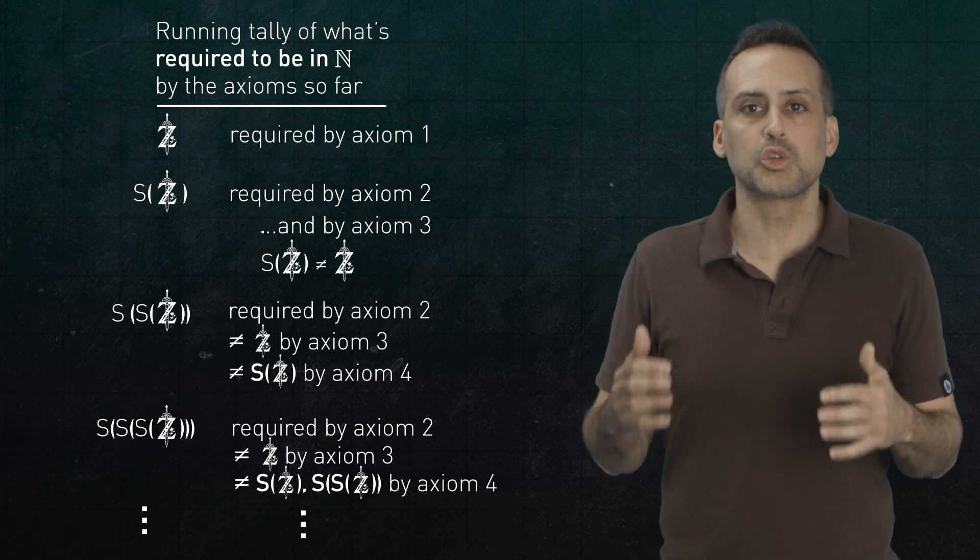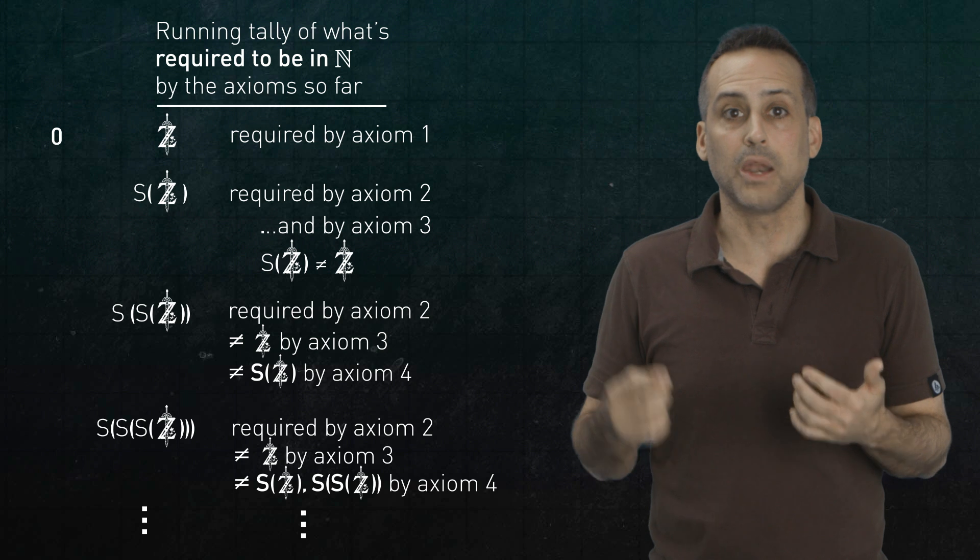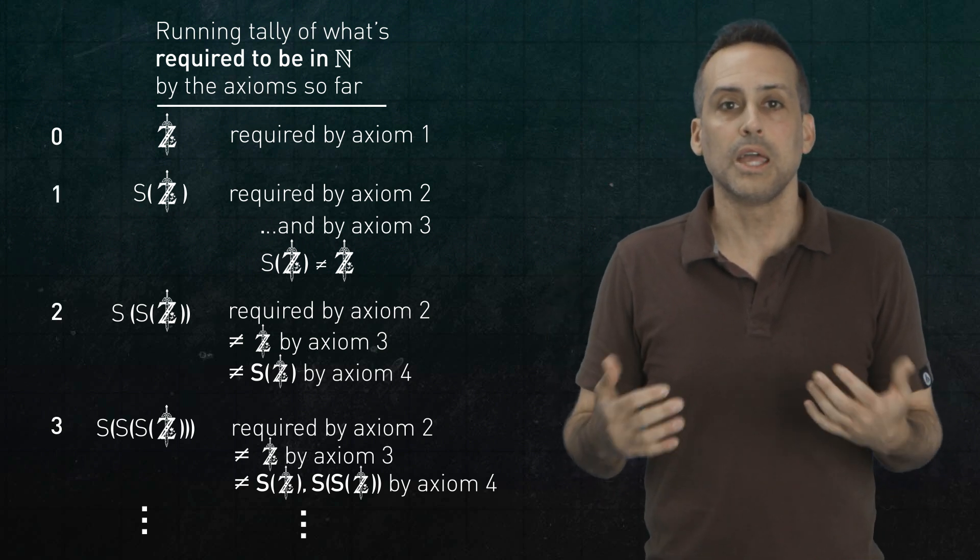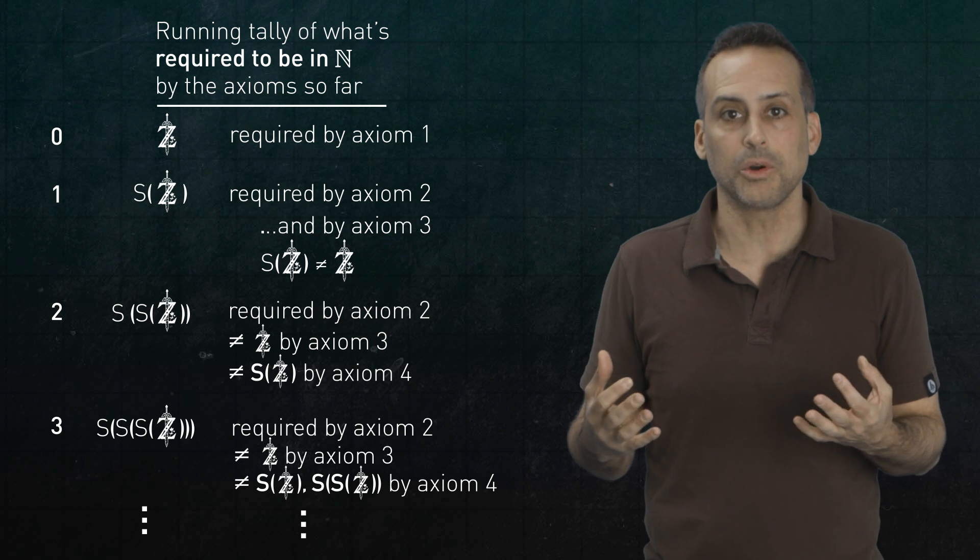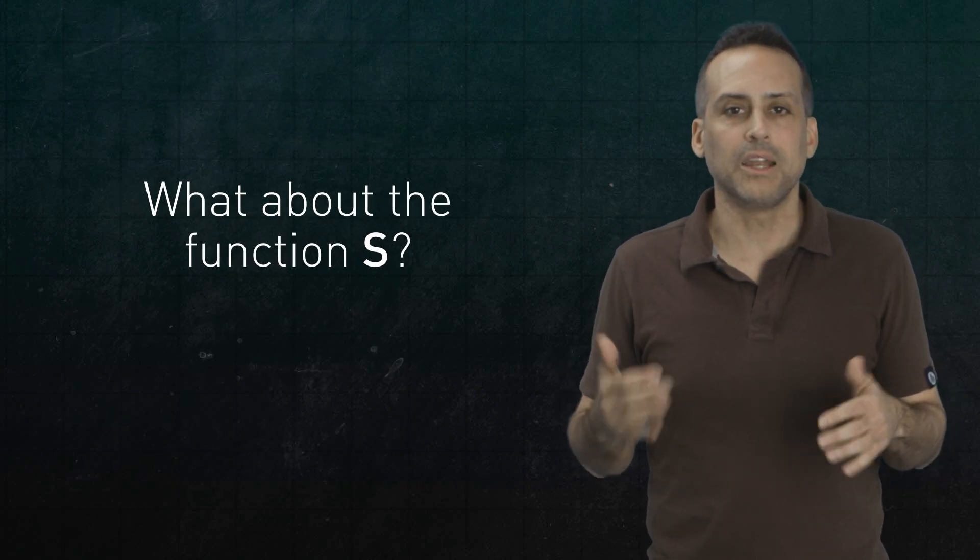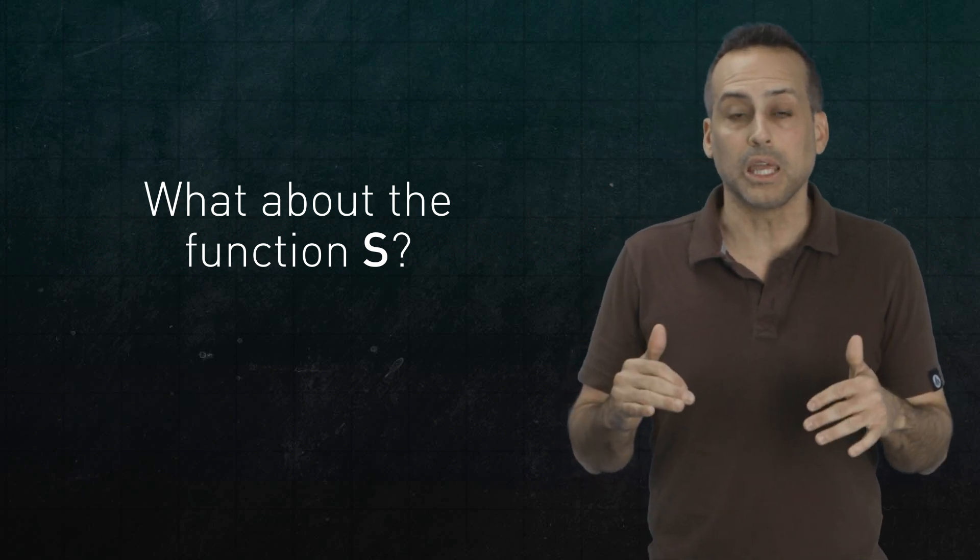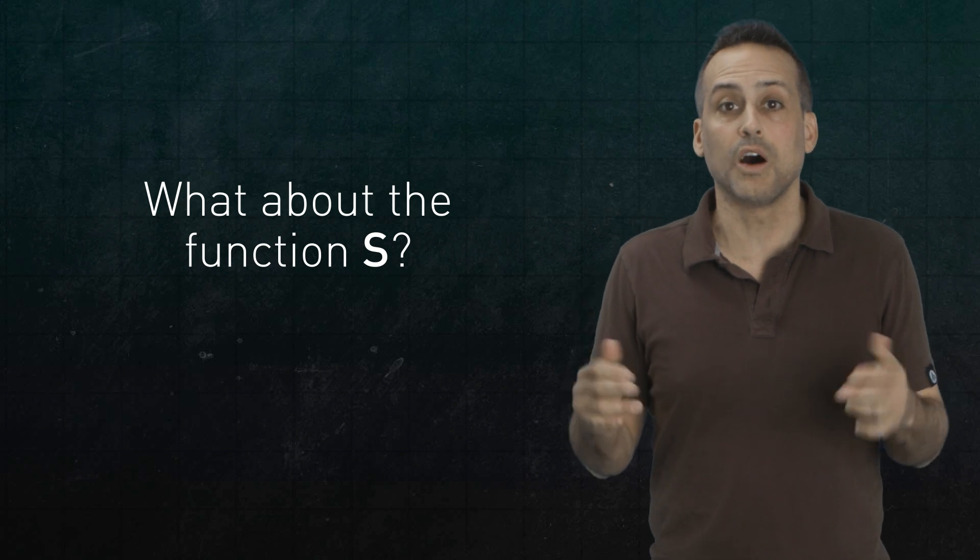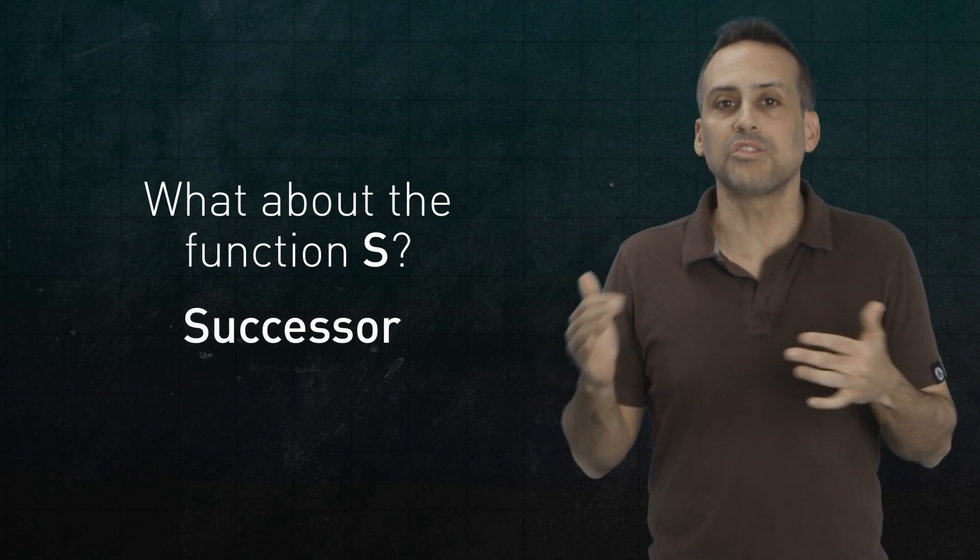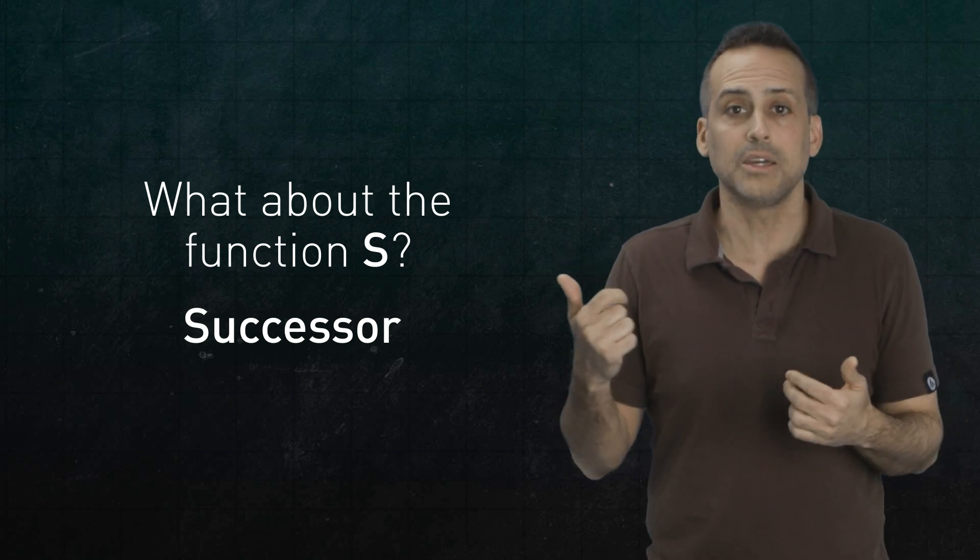If we introduce some shorthand names for these elements, borrowing Arabic numerals, like 0 for Zelda, and 1 for s of Zelda, and 2 for s of s of Zelda, and so on, it will look exactly like the counting numbers. Now what about the function s? Notice that we never specified its internal mechanics. We just enforced some constraints on its behavior that apparently capture the intuitive notion of next or successor, ergo the s. And we used as ingredients only the abstract concept of a function and the idea of equals.